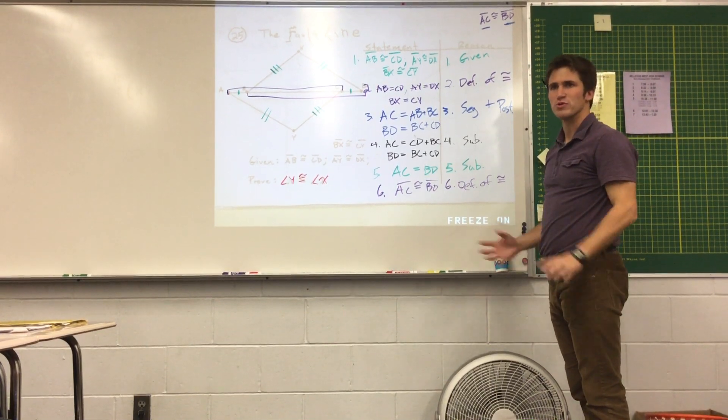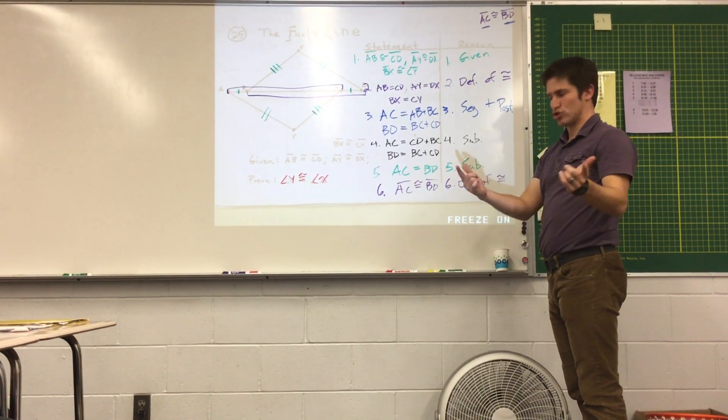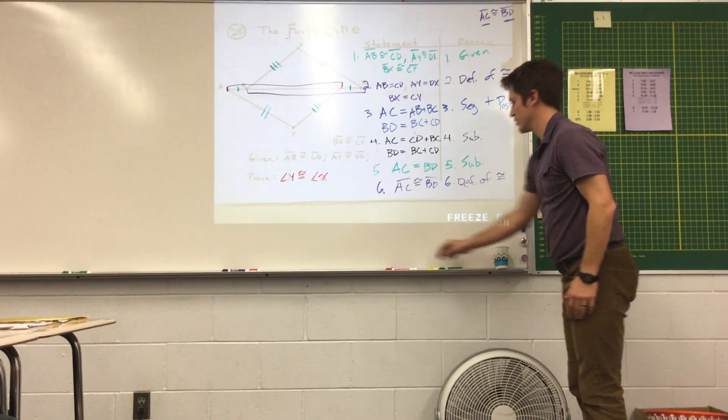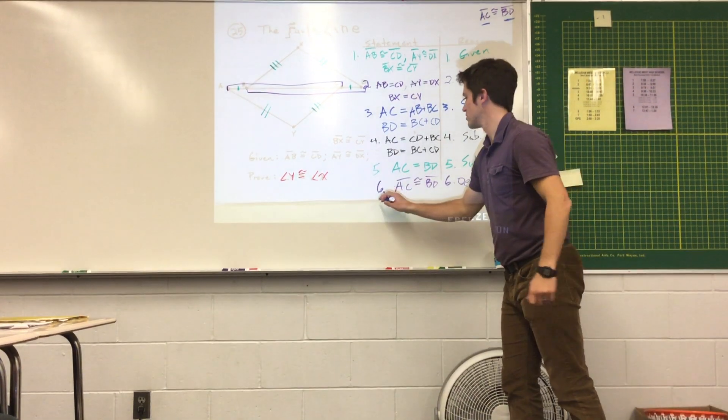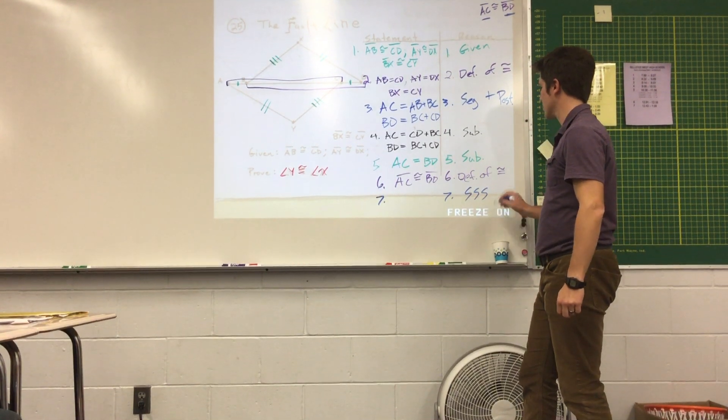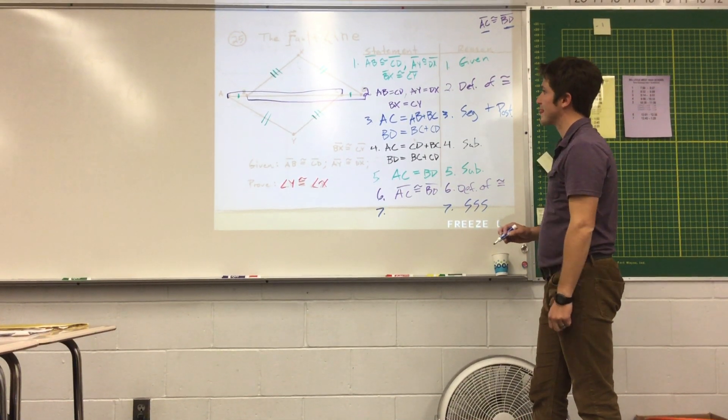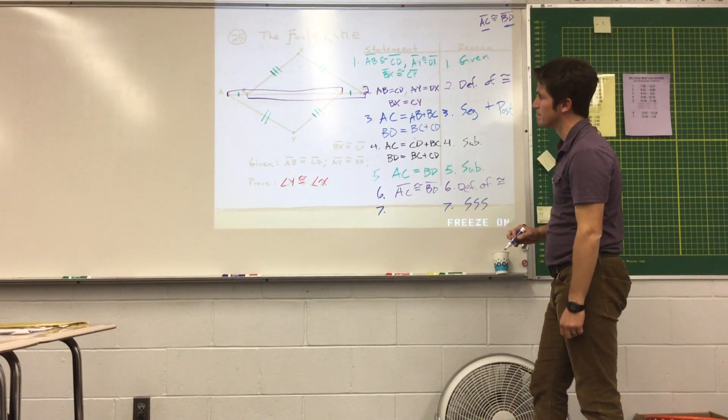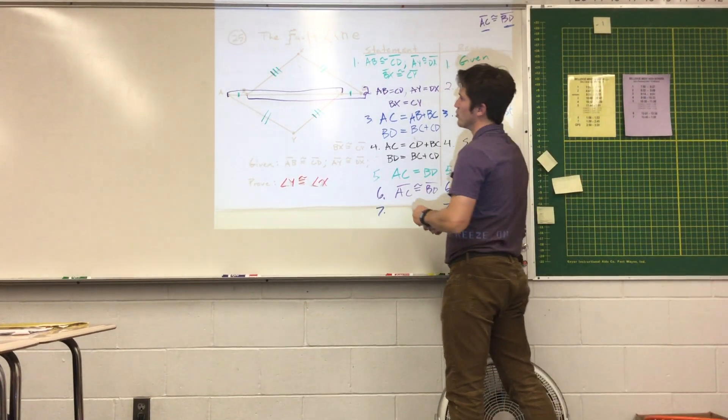But why was I even trying to do that in the first place? What's next? You could say the triangles are congruent. Triangles are congruent. So, this is side, side, side.